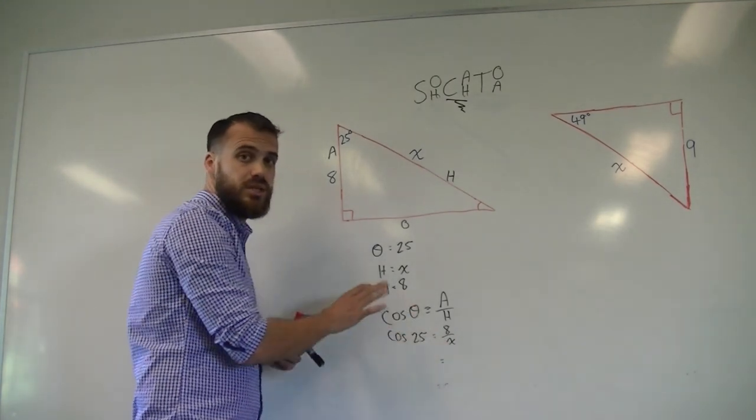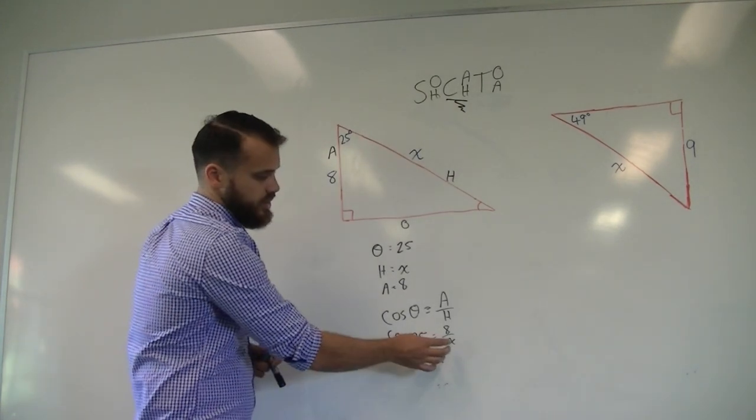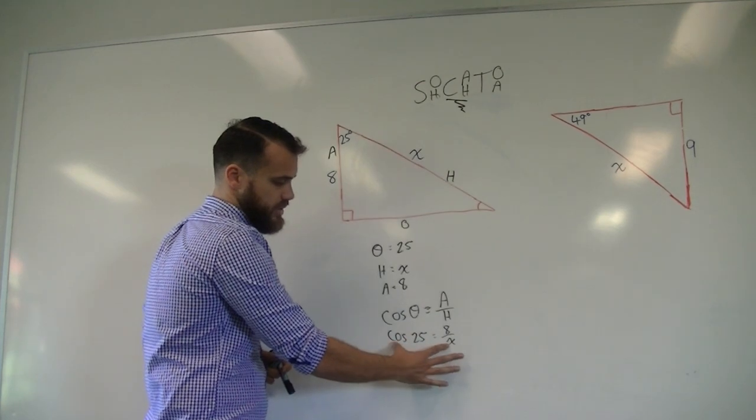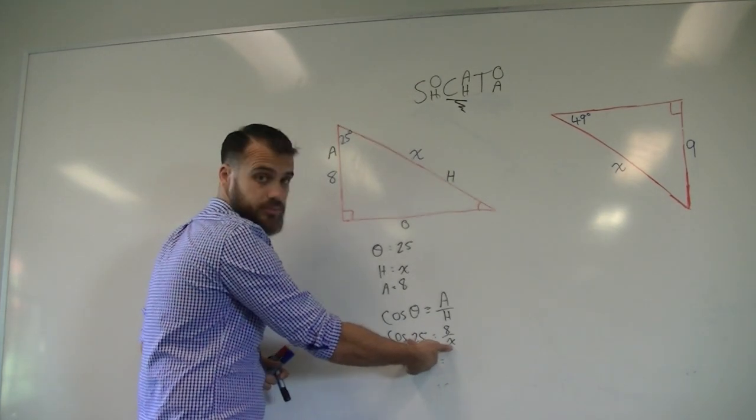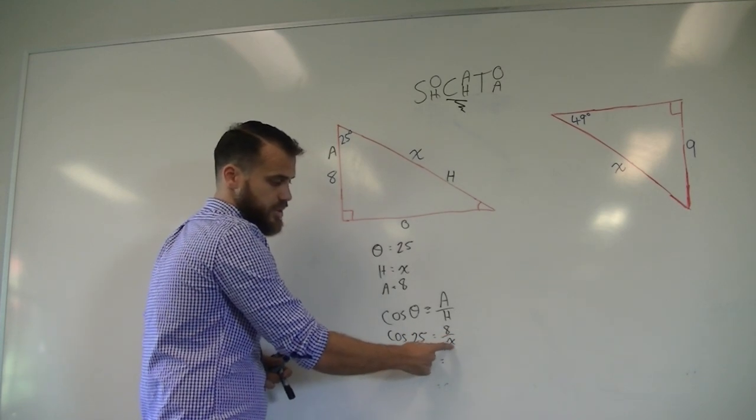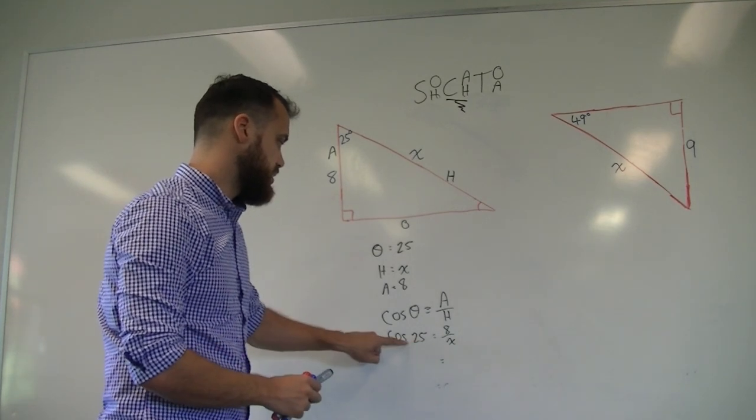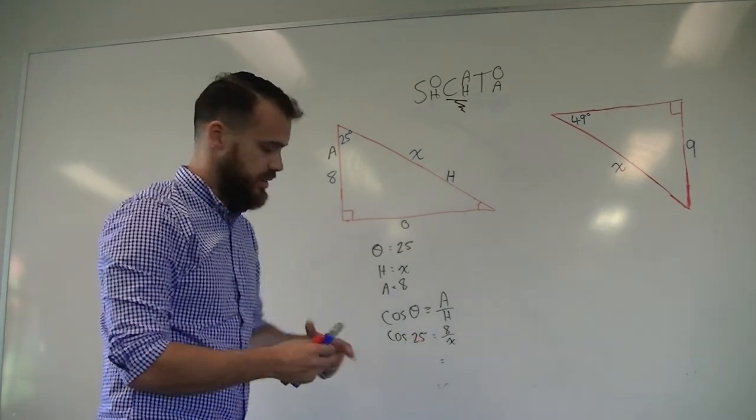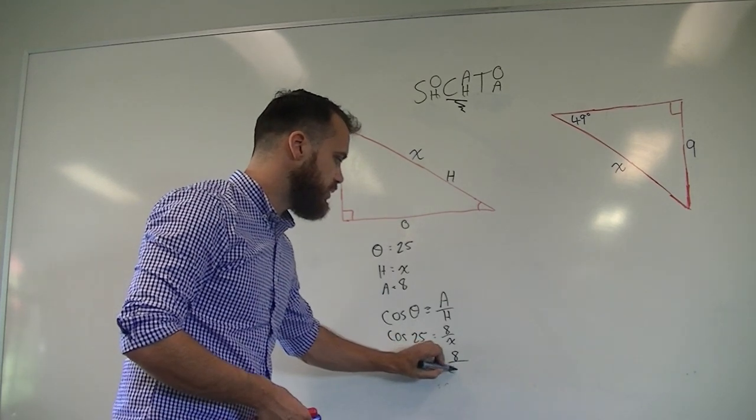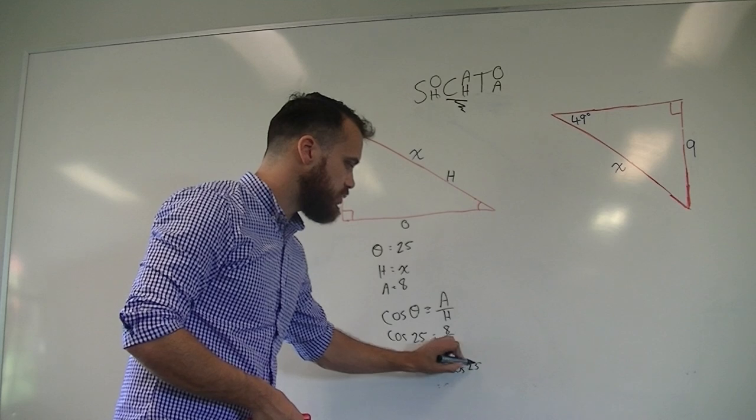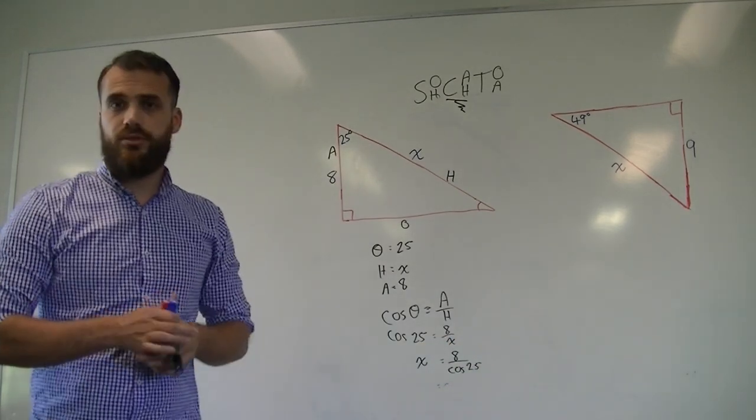This time x is on the bottom, so we need to do something different. The different thing that we're going to do, watch carefully, we're going to take x, we're going to take cos 25 and we're going to swap them. Cos 25, x, swap. So that x is going to move to here and cos 25 is going to move to there. So it's going to look like this in the next line. x equals 8 on cos 25. That's it. Grab a calculator.